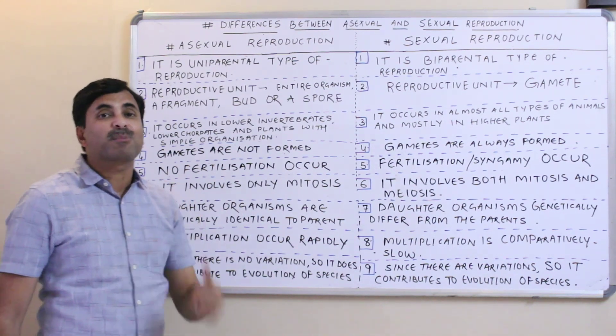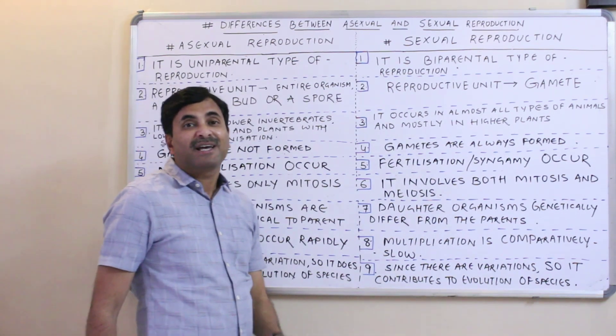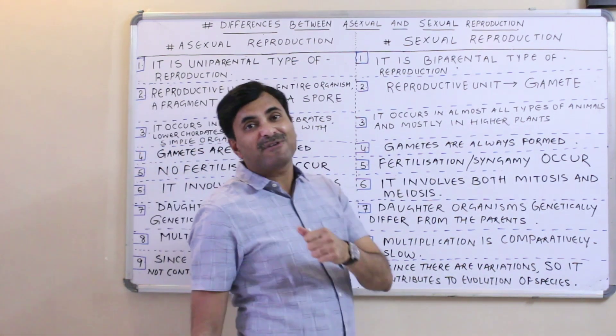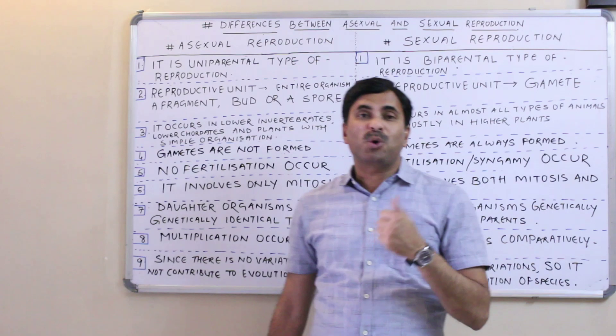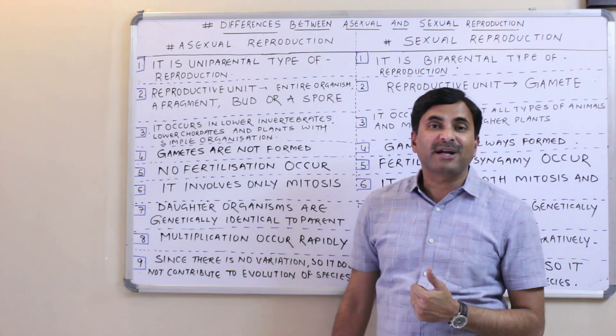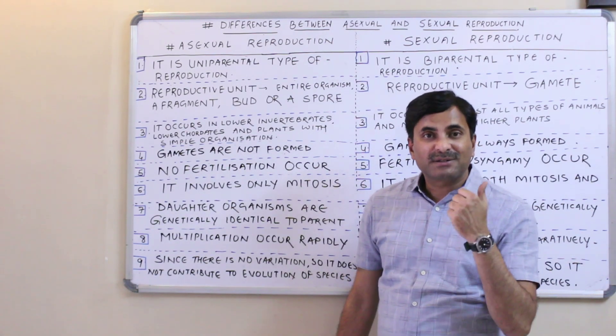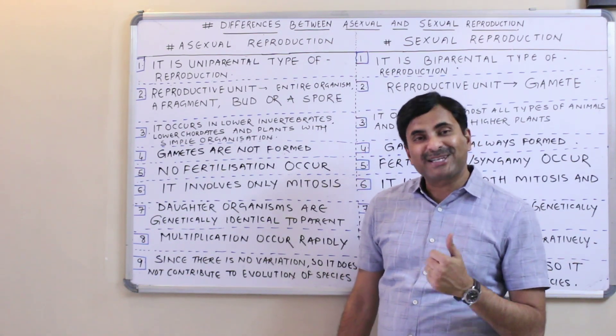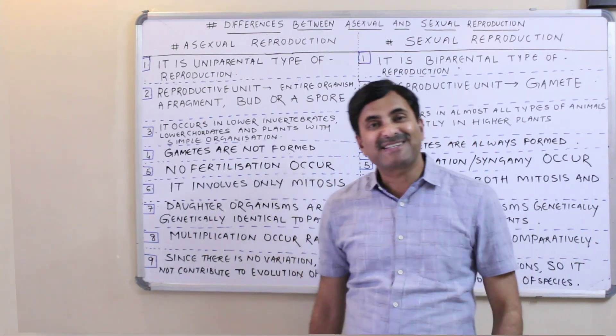So these were the nine differences between asexual reproduction and sexual reproduction, which will help you better study the reproductive unit. In the coming time I will be uploading lots of videos regarding this topic, so keep watching. Thanks a lot.